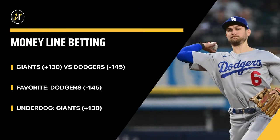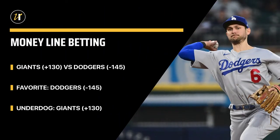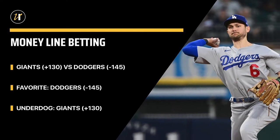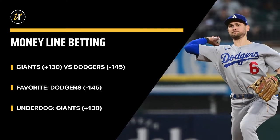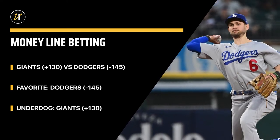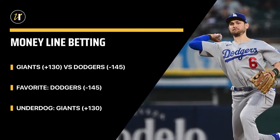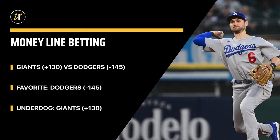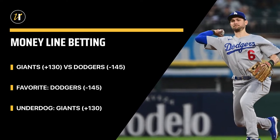So for an example, if the Dodgers are hosting the Giants, LA would come in as a minus 145 favorite with the Giants coming back as a plus 130 underdog.